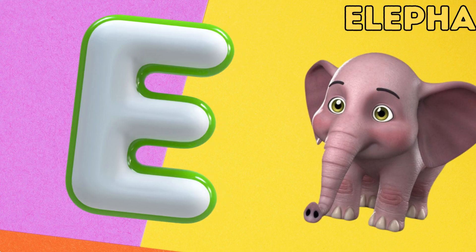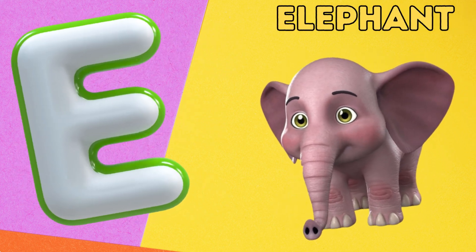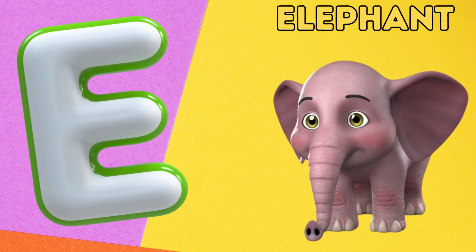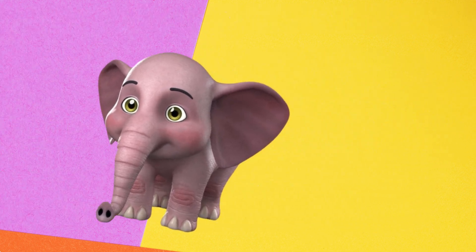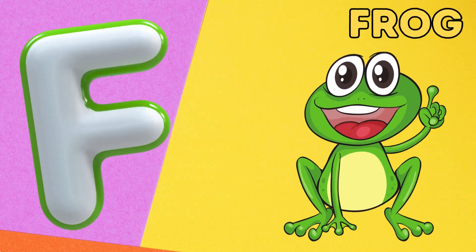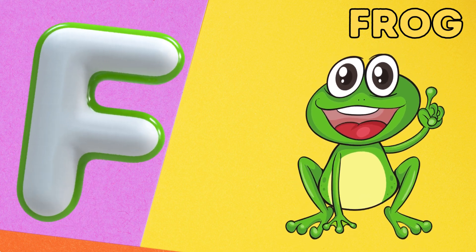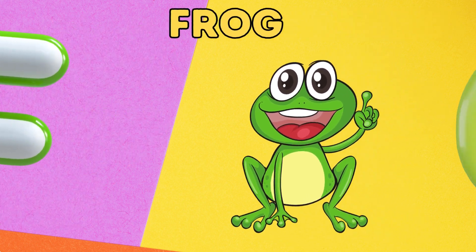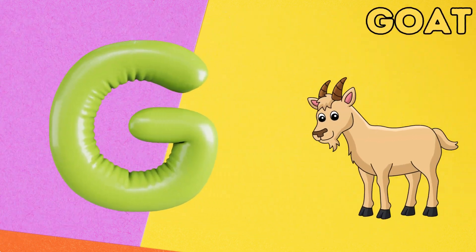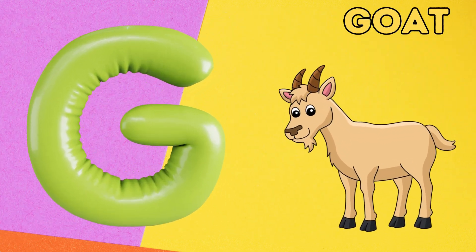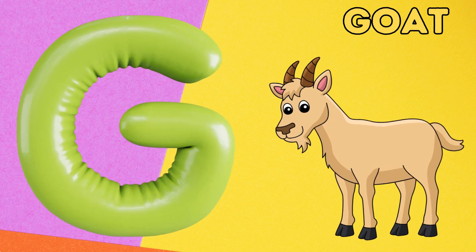E is for elephant, e-e-elephant. F is for frog, f-f-frog. G is for goat, g-g-goat.